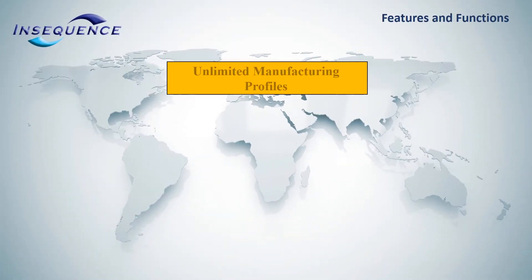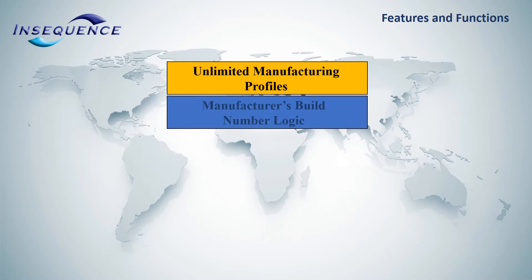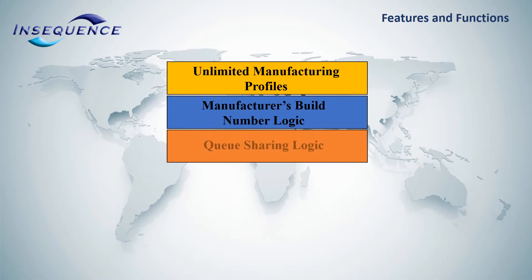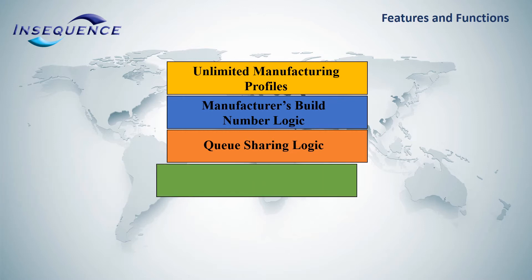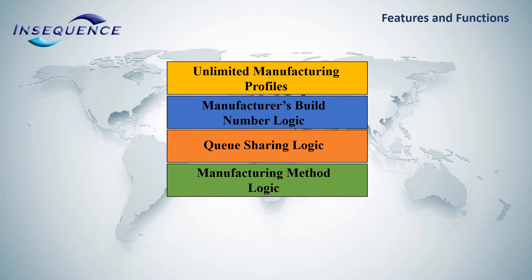Unlimited manufacturing profiles allows for model changes to the assembly line prior to implementation. Manufacturers' build number logic assigns a unique tracking number to every module built. A feature called queue-sharing logic allows production to be assigned dynamically to more than one assembly line. Manufacturing method logic provides a mechanism to create multiple manufacturing methodologies and to activate them on demand, including the ability to define routing steps and bills of material.